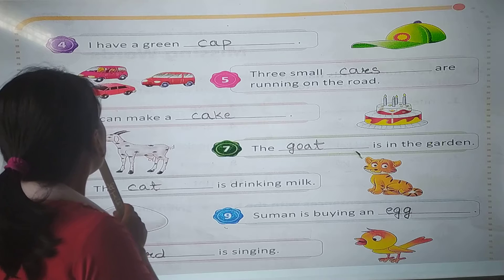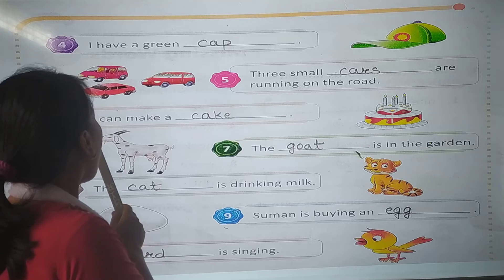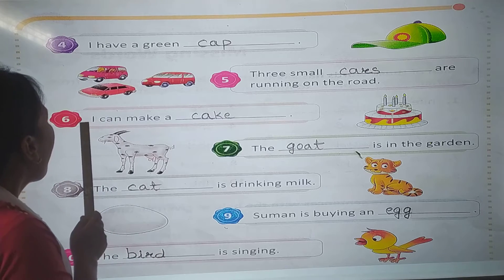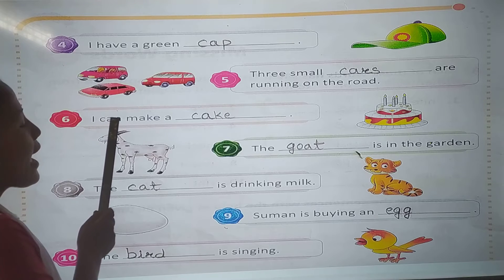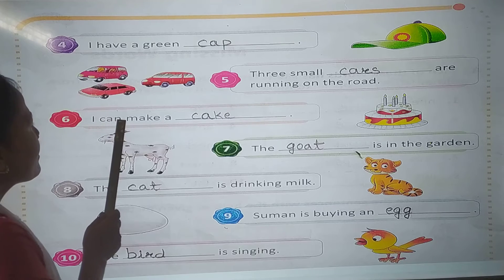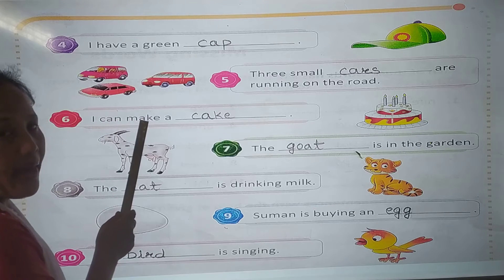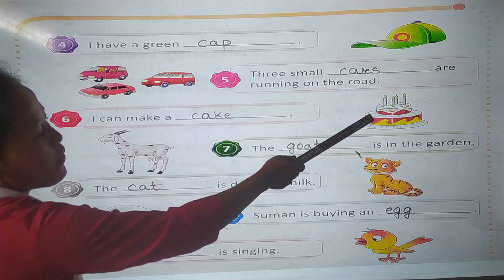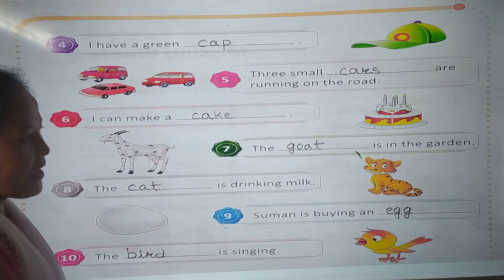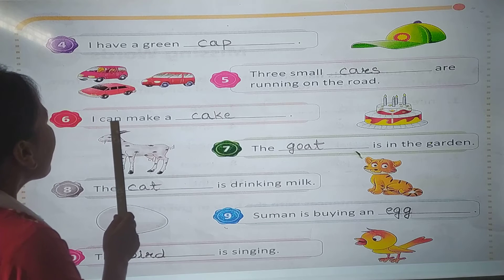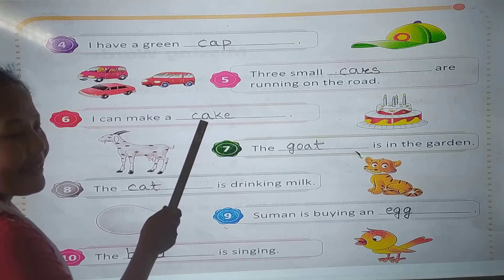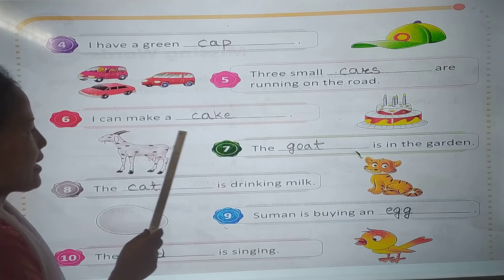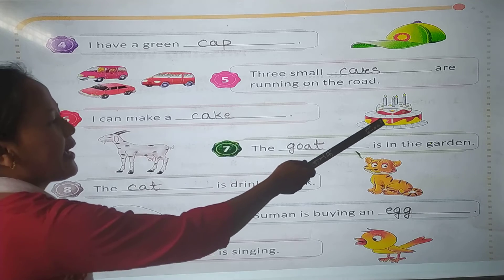So in number 6: I can make — look at the picture, what is this? Yes. Cake. I can make a cake. C-A-K-E.